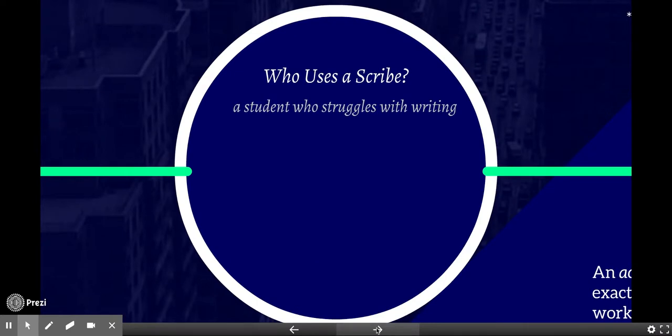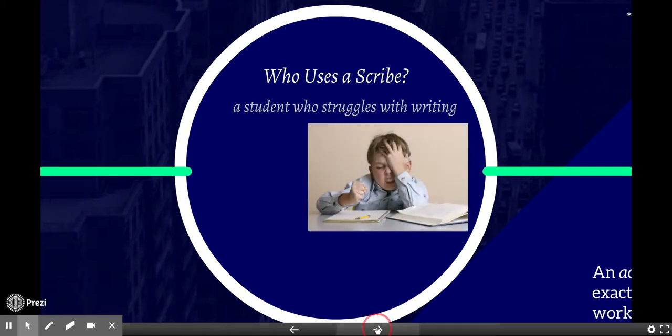Who uses a scribe? A student who struggles with writing. These struggles may be a result of such things as dyslexia, dysgraphia, or a child who is simply a slow processor, or a student who is blind or visually impaired.